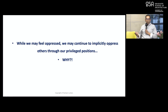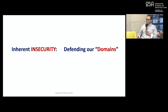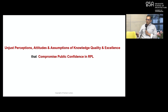When we stop defending our domains and realize that we are just dwelling in a much bigger reality, then we may start to question our preconceptions, misconceptions, and disinformation, and stop playing into historical gatekeepers. One challenge to RPL is that it seemed to be seen as a shortcut to qualification. These perceptions sometimes intentionally compromise public confidence in alternative learning pathways. RPL is just one mechanism — it's about alternative learning pathways, and there are many others.